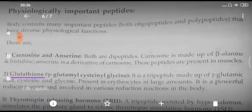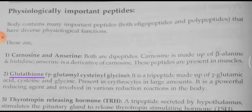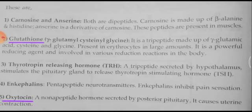Next, we are going to discuss physiologically important peptides. There are several peptides which have various physiological importance, and we are going to concentrate on only a few. In this list, you can see carnosine and anserine. Next, glutathione — a tripeptide made up of glutamic acid, cysteine, and glycine. It is present in erythrocytes in large amounts, is a powerful reducing agent, and is involved in various reduction reactions in the body.